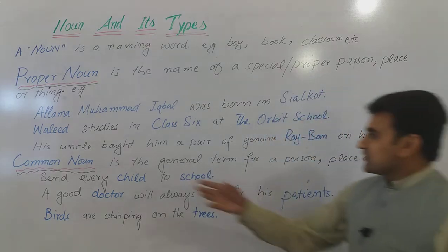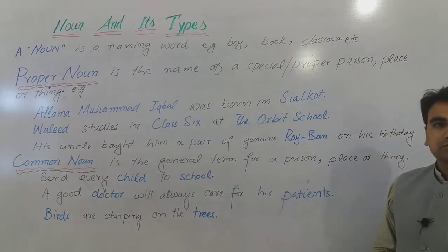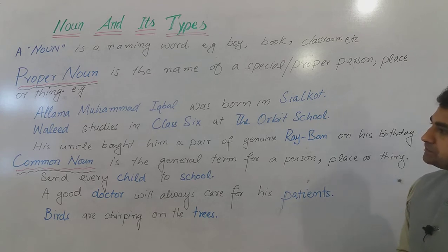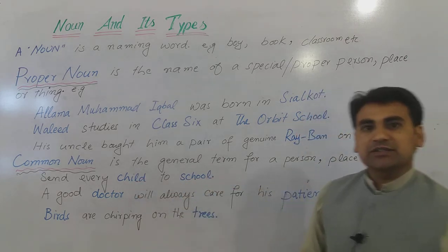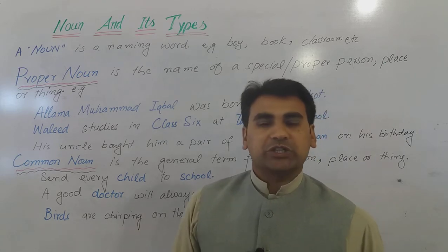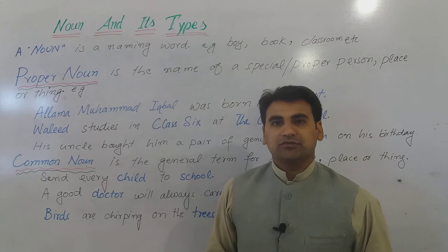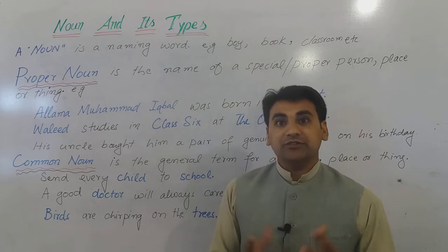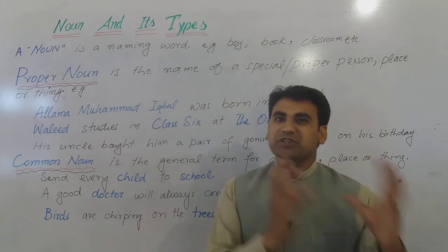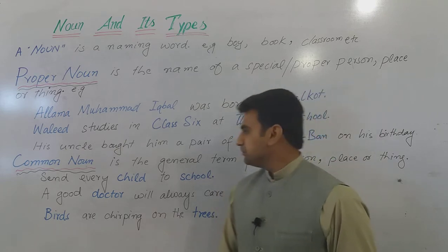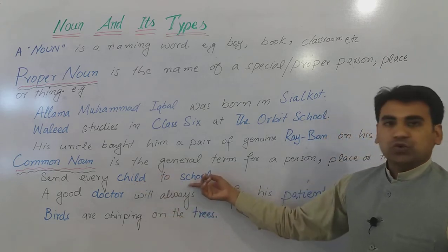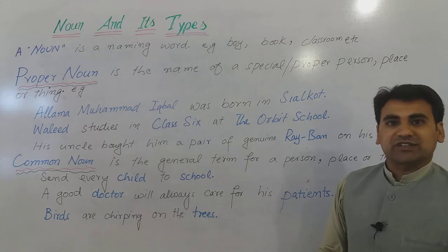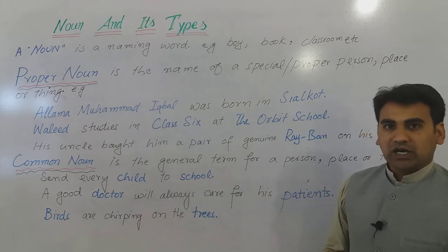For example, 'Send every child to school' — it is a movement to educate every child in society. Which child? We are not concerned with any specific child; the purpose of the slogan is every child in general, not some specific category. So 'child' is a common noun. 'School' is also a common noun because no specific school is mentioned — any school would do. So both 'child' and 'school' are common nouns.